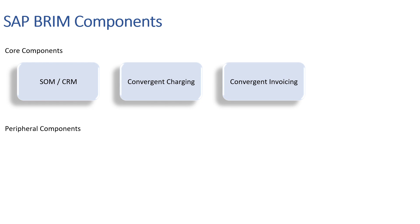The third component is SAP Convergent Invoicing, short form SAP CI. It is basically an SAP module in the ERP system which handles billing and invoicing of different kinds of subscription scenarios.